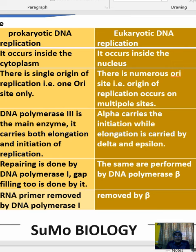Hello, welcome to Summa Biology. This slide is about the difference between prokaryotic DNA replication and eukaryotic DNA replication. Prokaryotic DNA replication occurs inside the cytoplasm, whereas eukaryotic DNA replication occurs inside the nucleus.